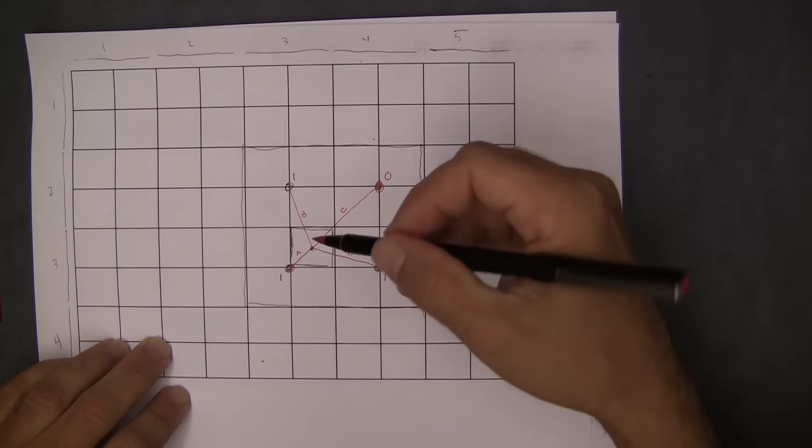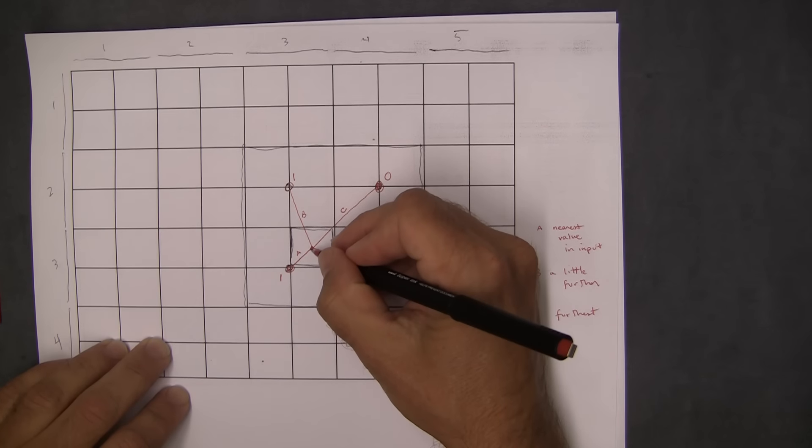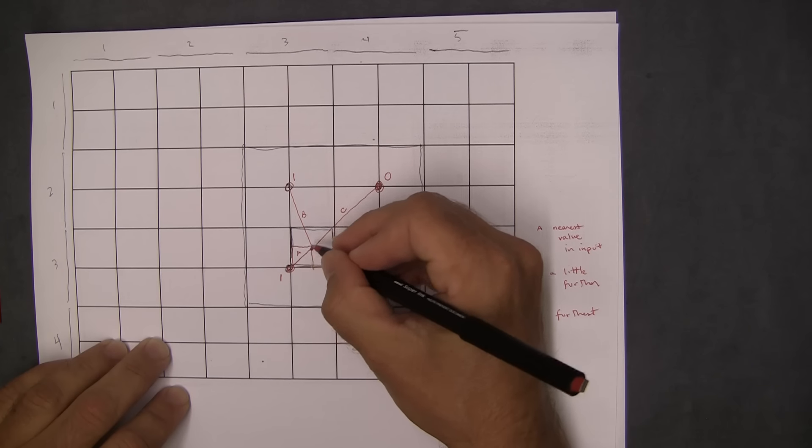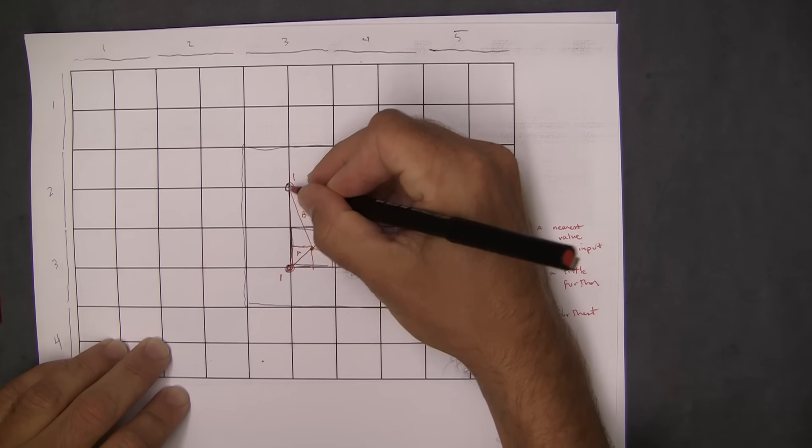Is that fair so far? One way to kind of figure that out is just to draw kind of triangles, and this hypotenuse I think is a little bit smaller than that one.